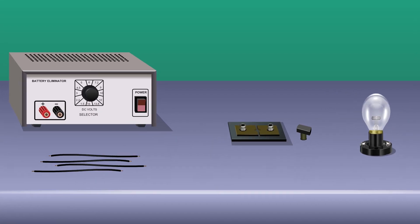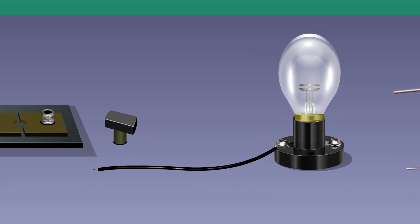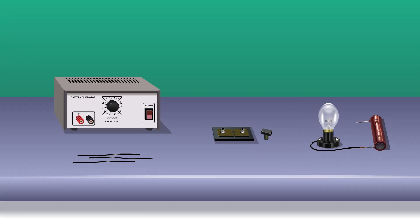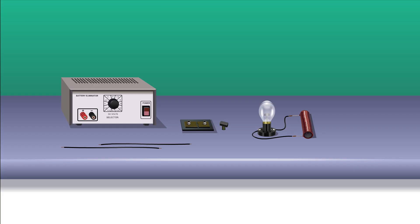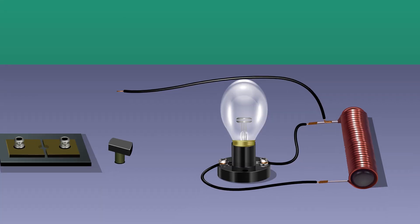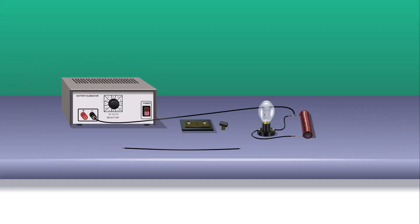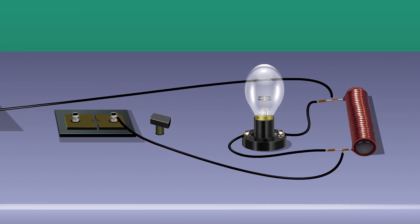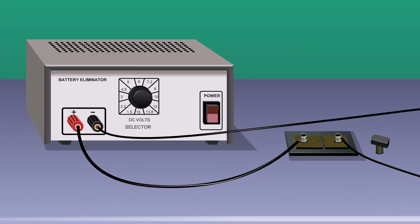Procedure: Connect the neon lamp across the two terminals of an inductor. Connect one terminal of the inductor to the negative terminal of a battery eliminator. Connect the other terminal of the inductor to the one-way key. Connect the one-way key to the positive terminal of the battery eliminator.